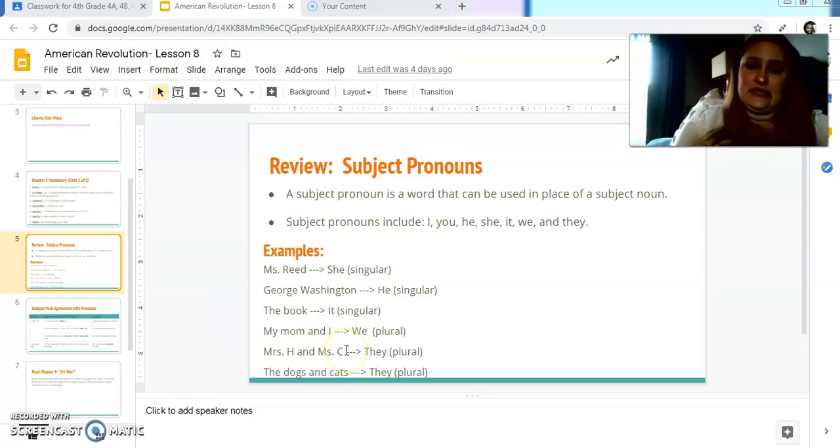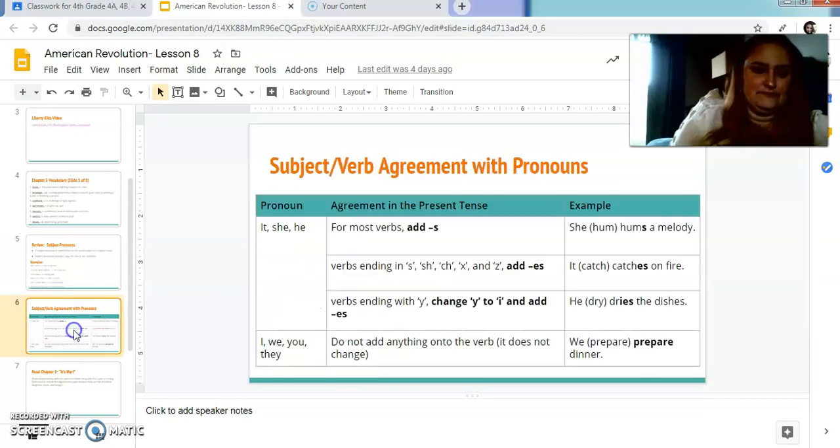Mrs. H and Mrs. C teach for C. They teach for C because I'm talking about more than one person. I'm talking about two people. So they would become they. The dogs and the cats. I say the dogs and the cats are fighting. They are fighting. It's plural. There's more than one. They is pretty much used a lot for plural. So we are they for plural. You can also be used for both plural and for singular. So just pay close attention.